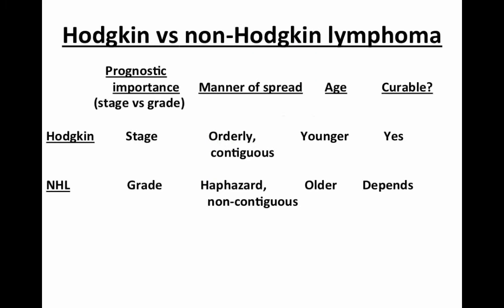It's discriminating Hodgkin versus non-Hodgkin lymphoma, and that is not a typo. There is no apostrophe after Hodgkin's or non-Hodgkin's. Pathologists for the World Health Organization got rid of apostrophes. Same thing with Burkitt's — it's now Burkitt lymphoma. They don't like apostrophes.